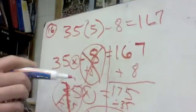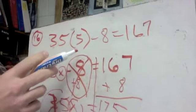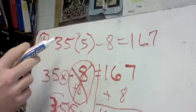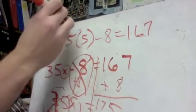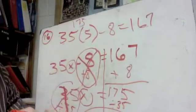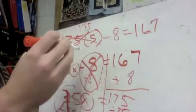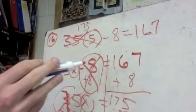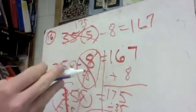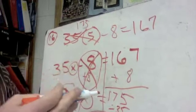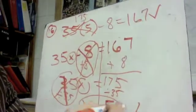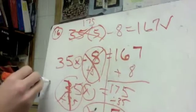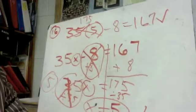If I do this problem, 35 times 5, 30 times 5 is going to be 150, 5 times 5 would be 25. Add those together, that would be 175. Now I've got 175 take away 8, 175 take away 5 would be 170, 3 more would be 167. That checks out, that means that does too. If you've got all this, 5 points for this part.